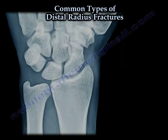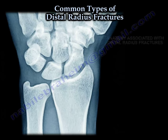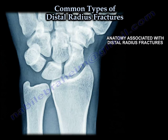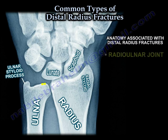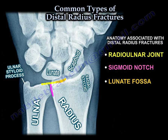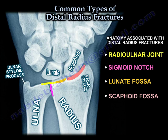Common types of distal radius fracture. We need to know a few things about the anatomy and a few things about the x-ray and what we look for. It's not just the fracture — we need to look at the radiocarpal joint, the sigmoid notch, the lunate fossa, the scaphoid fossa, and the ridge in between the two fossae.